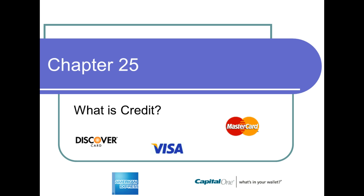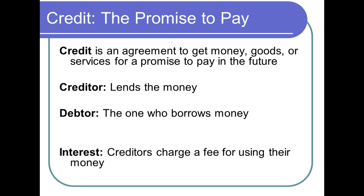What is credit? When we think of a very basic definition, credit is an agreement to get money, goods, or services for a promise to pay in the future. So we get the things that we want today and enjoy them today, but then we use credit to pay it slowly off into the future. The creditor is the one who's lending you the money, and the debtor is the one who's borrowing the money — those are the two parties in the contract. The creditor is giving you money up front, so they're going to charge you for use of that money. Interest is the fee — the usury fee for borrowing money.